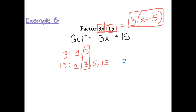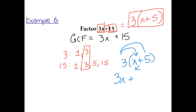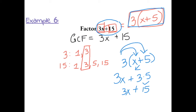To check our answer, we take 3 times the sum of x plus 5 and distribute the 3 back in. 3 times x is 3x, bring down your symbol plus, 3 times 5 is 15. Bring everything down and we end up with 3x plus 15, the expression we started with. This tells us that our factored expression is correct.